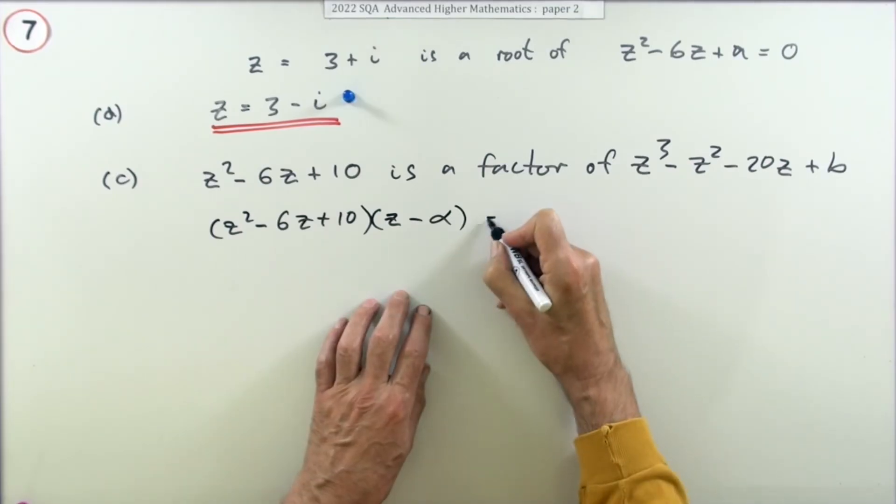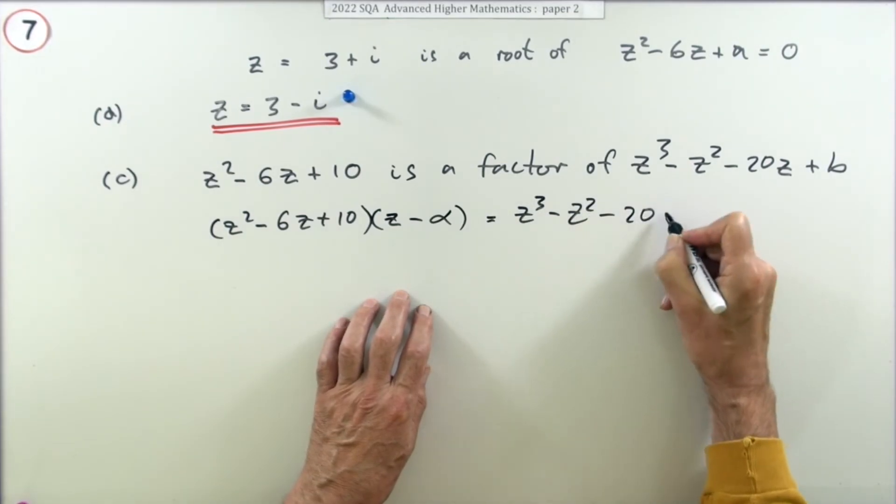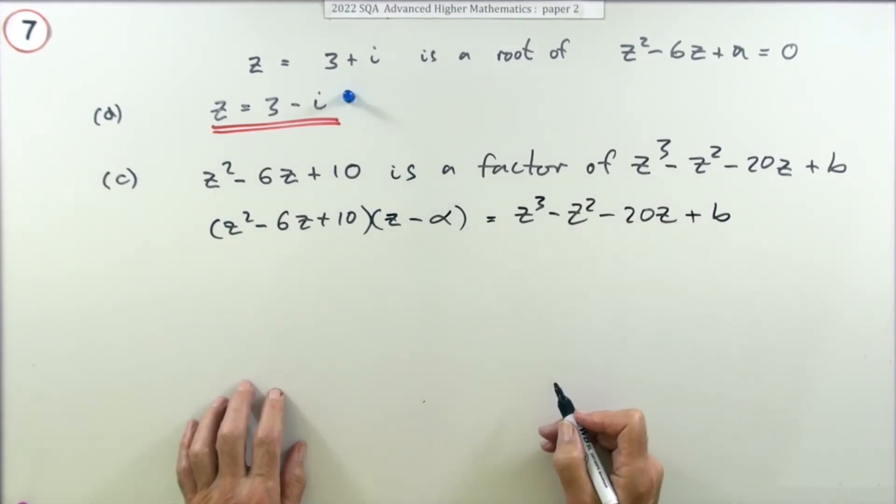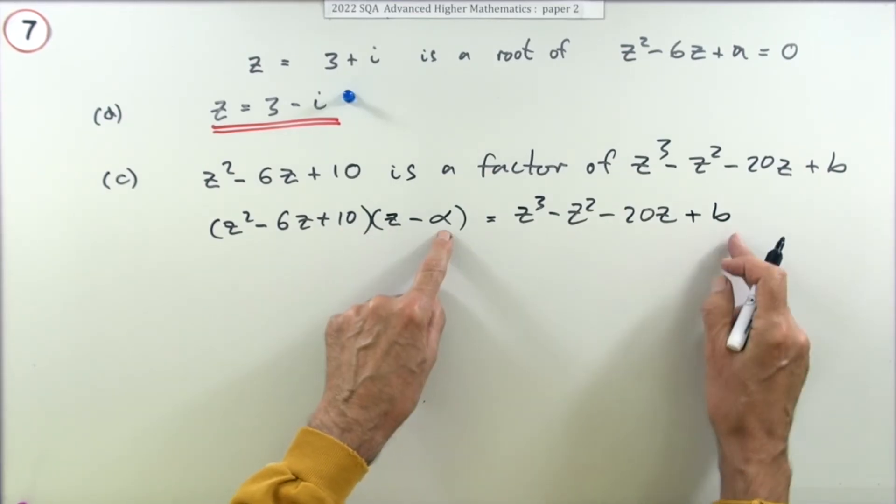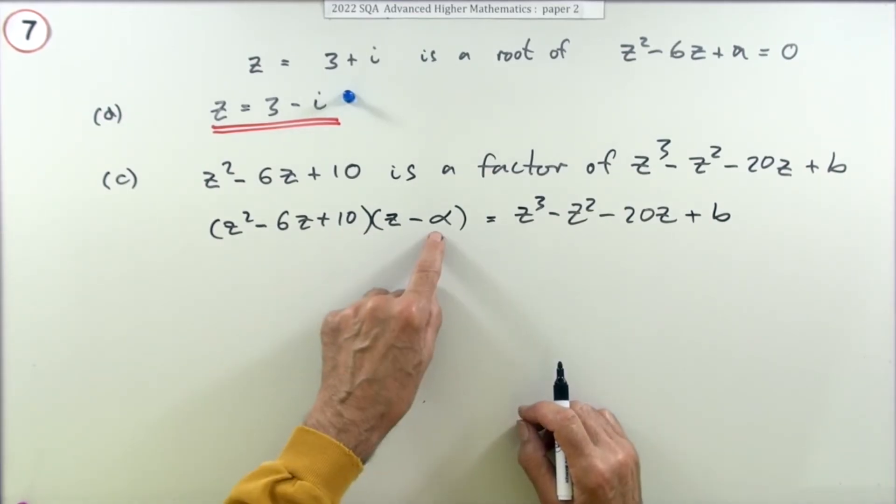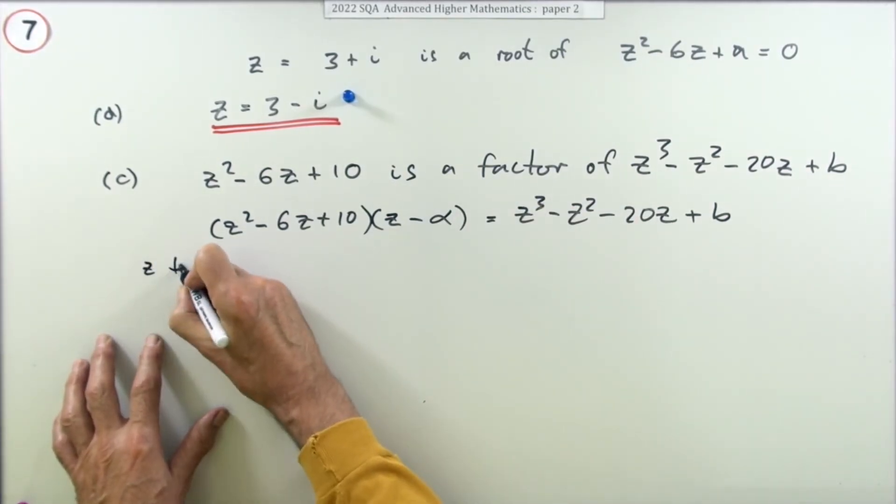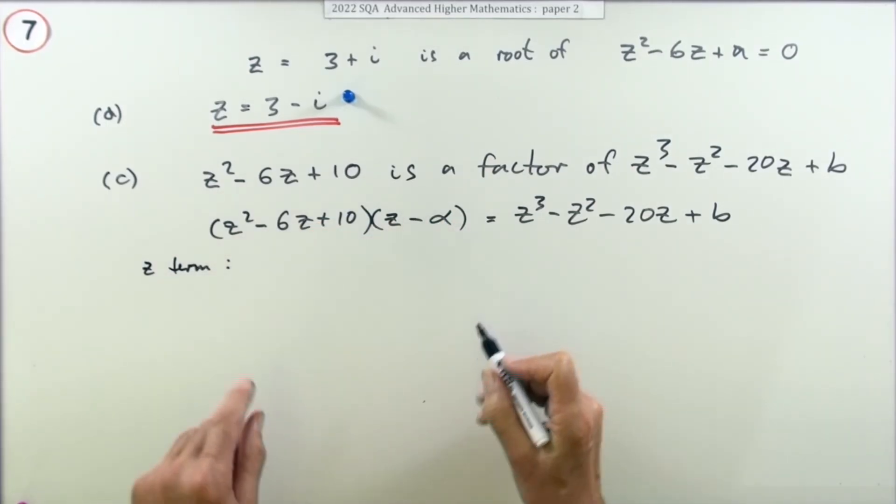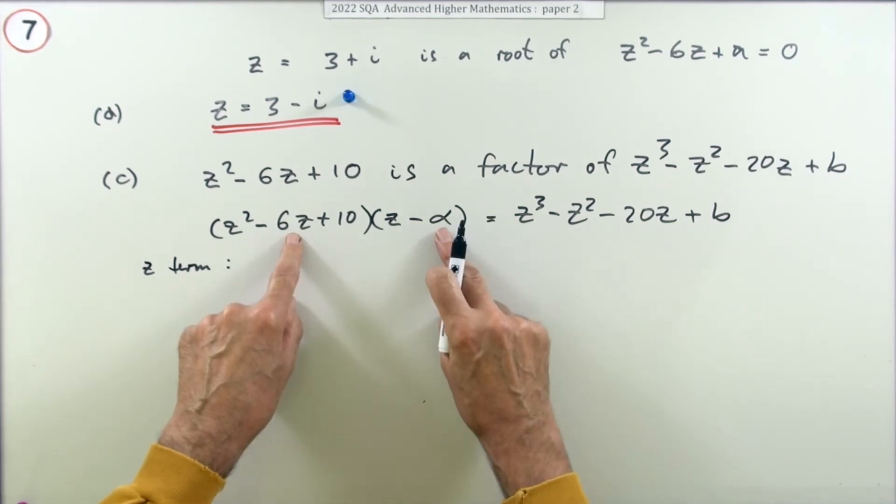That should make z cubed minus z squared minus 20z plus b. Now I can compare the parts. If I knew what alpha was, then I'd know the product of them makes b. So how can I find alpha? I'll pick one of the other ones. Let's say for instance you pick the z term. I'll reconstruct the z term from this. Now what would make a z out of this product? Well the 6z times the alpha.